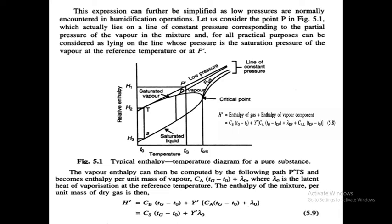For this section, P' to T-S, the temperature range is from Tg to T0 — dry bulb temperature to reference temperature. The latent heat used is the latent heat of vaporization at the reference temperature only, because this is the vapor enthalpy only.